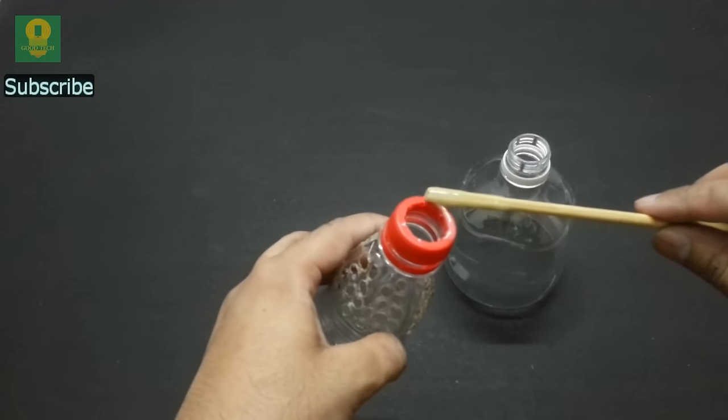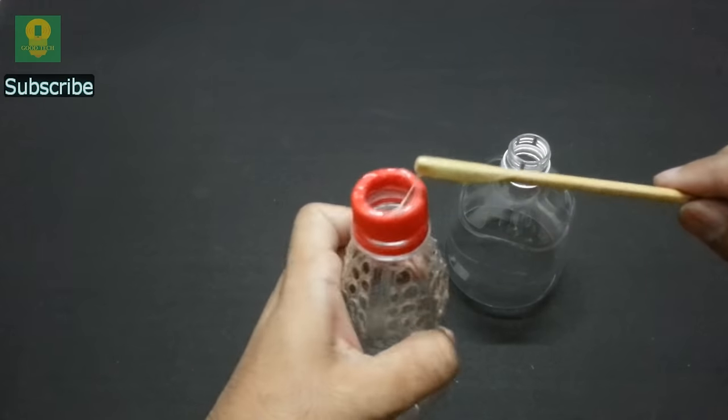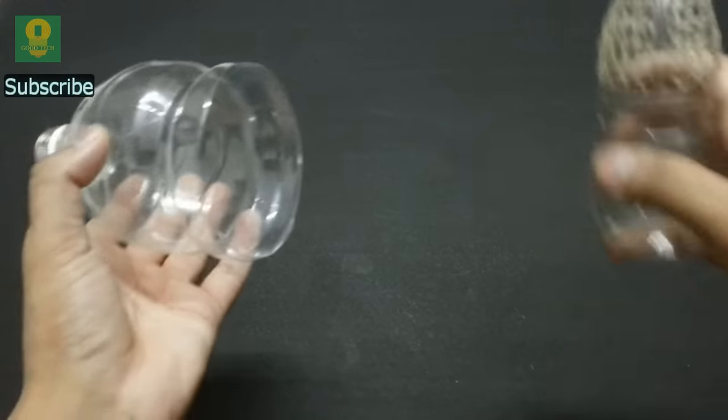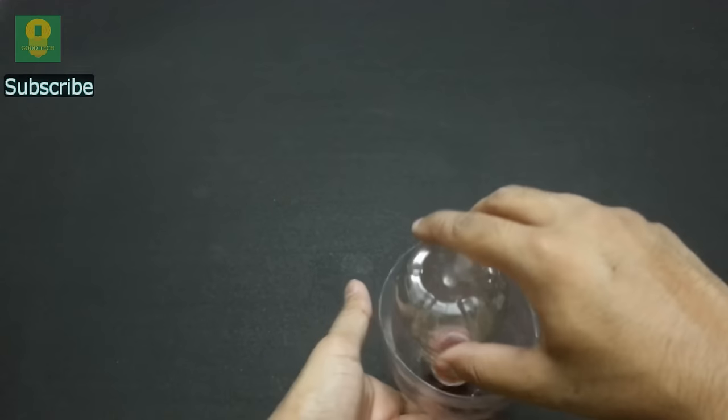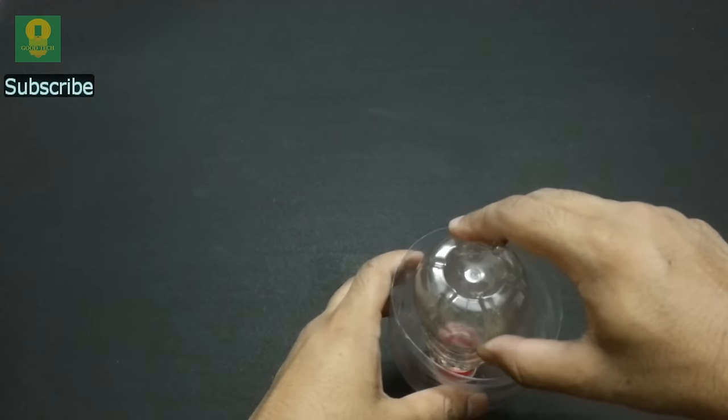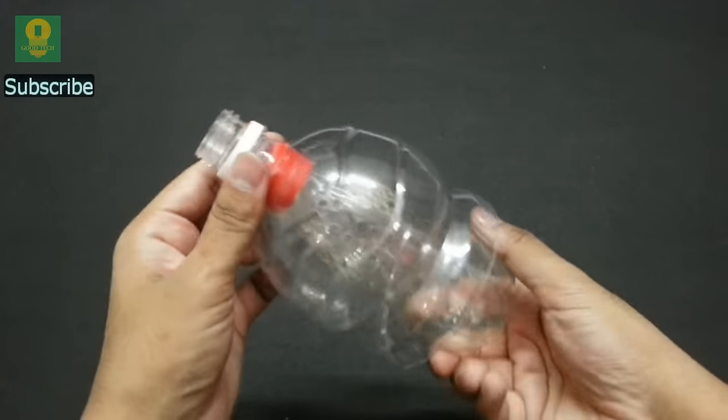Apply adhesive and paste the small bottle inside the neck of the large bottle. This bottle will act as the separate dust container.